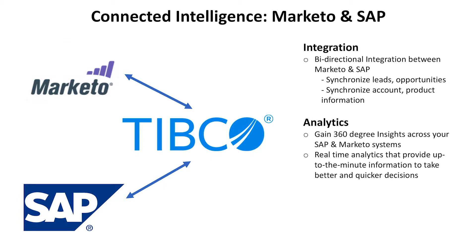You can integrate your data with bi-directional connectivity within Marketo and SAP, synchronize leads and opportunities, and synchronize account and product information. Once you have a holistic view of this data, you can gain 360-degree insight across your SAP and Marketo systems.